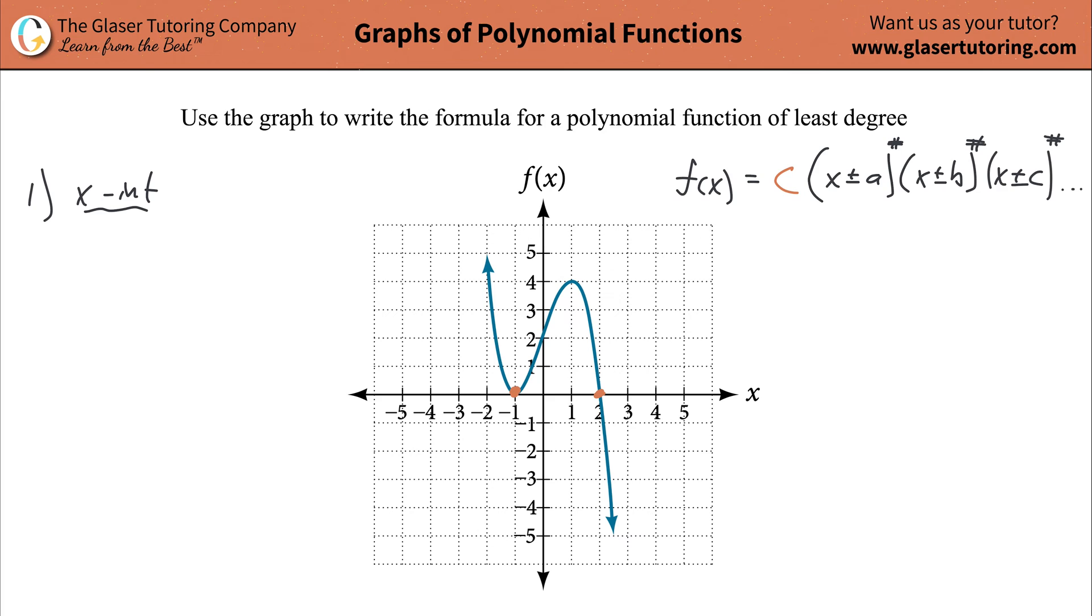So it looks like I have two x-intercepts here, right? One at negative one, so the x value was equal to negative one, and then another one at two, x is equal to two. Now the factors that give rise to these x-intercepts—you know that basically you would have to change the sign. This x-intercept came from a factor of x plus one, and this one came from a factor of x minus two.